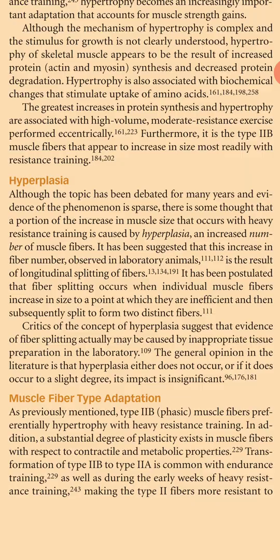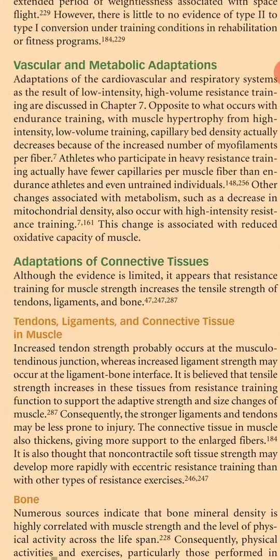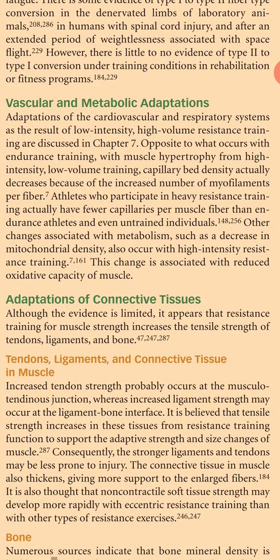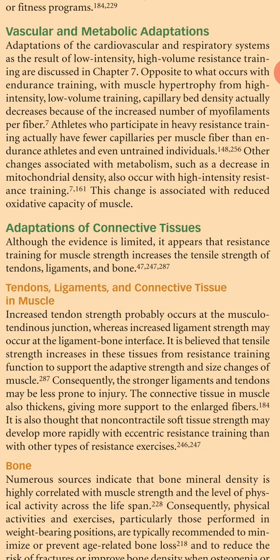This transformation makes the type 2 fibers more resistant to fatigue. There is some evidence of type 1 to type 2 fiber conversion in the denervated limbs of laboratory animals, in humans with spinal cord injury, and after an extended period of weightlessness associated with space flight. However, there is little to no evidence of type 2 to type 1 conversion under training conditions in rehabilitation or fitness programs. Vascular and metabolic adaptations of the cardiovascular and respiratory systems as a result of low-intensity, high-volume resistance training are discussed in Chapter 7.